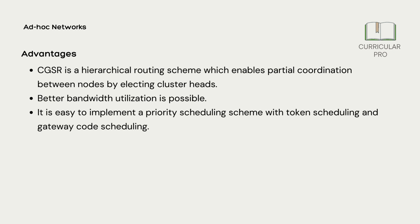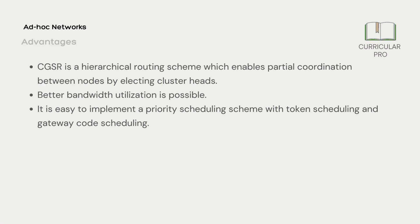Advantages: 1. CGSR is a hierarchical routing scheme which enables partial coordination between nodes by electing cluster heads. 2. Better bandwidth utilization is possible. 3. It is easy to implement a priority scheduling scheme with token scheduling and gateway code scheduling.